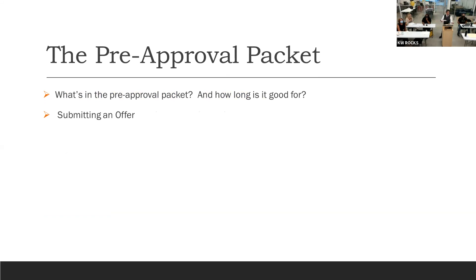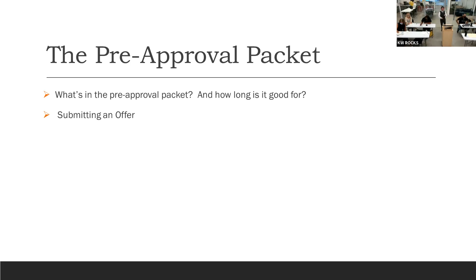The next step is the pre-approval process. The pre-approval packet includes: a pre-approval letter summarizing the client's financial qualifications, a copy of their complete credit scores, and proof of funds — a photocopy of their recent bank statement showing the balance available for down payment, escrow, and closing costs. That is the standard pre-approval packet: credit score, pre-approval letter, and proof of funds.